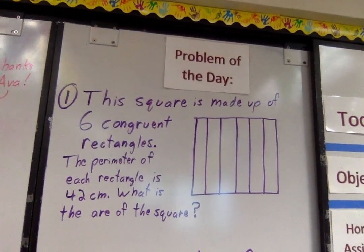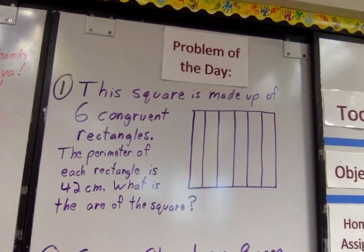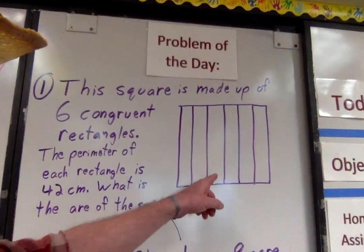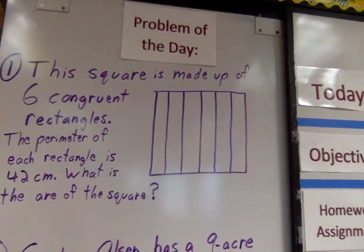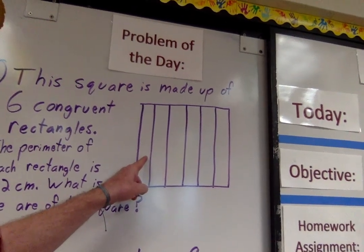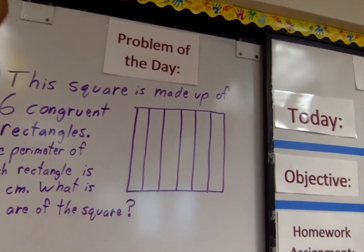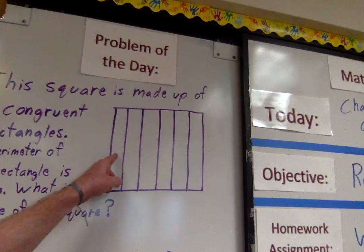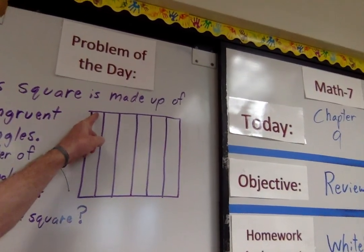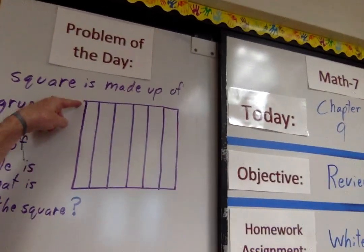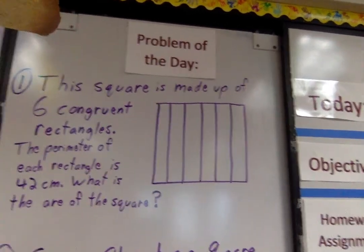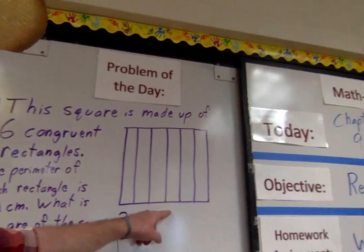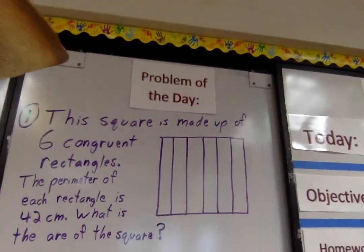Here's your first one. This square is made up of six congruent rectangles. The perimeter of each rectangle is 42 centimeters. What's the area of this square? The perimeter of this rectangle is 42. That means all four sides have to add up to 42. Guess and check until you plug it back in and say, if I took this width six times, is it going to be the same as the length of one of these rectangles? Guess and check until you get those two numbers the same, then multiply them.